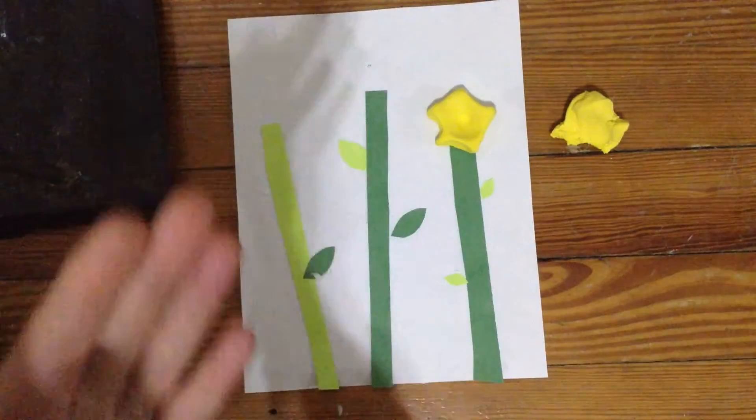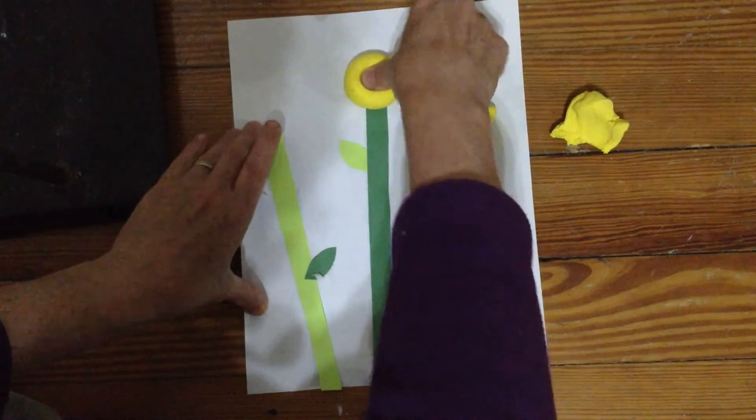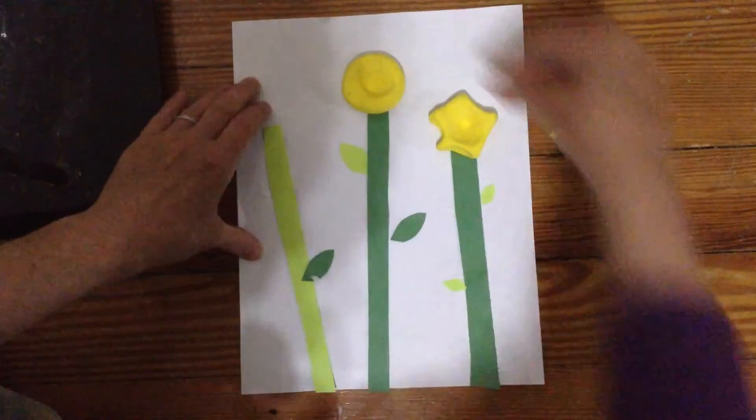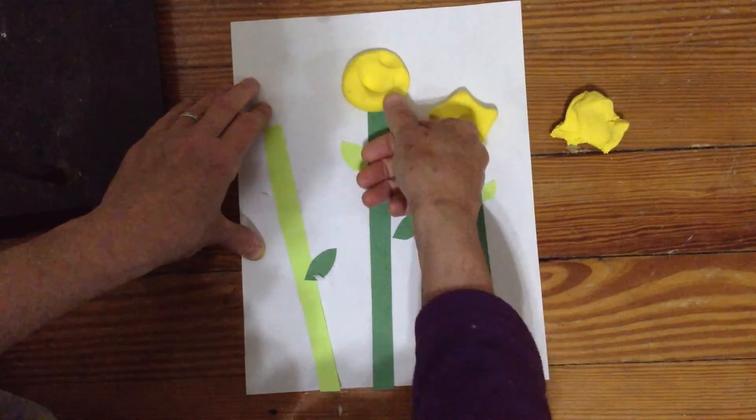For my next flower, roll it into a ball, press it into a circle. And I'm gonna put my thumb and then use my thumb to make the petals around the center.